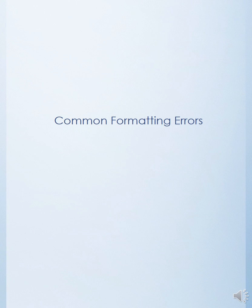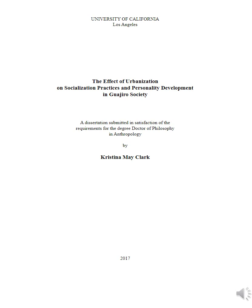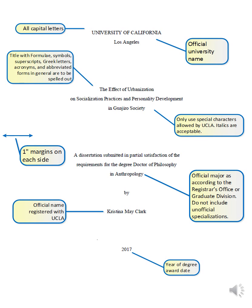Now that you know how the preliminary pages must look, let's go over common errors students make. The most common errors we see on the title page include the following. As shown here, the student did not double-space the page. Everything must be double-spaced. Additionally, the title has been bolded. There can be no bolding on the title page or other preliminary pages. Next, you must state the thesis or dissertation is submitted in partial satisfaction, as this is not the only requirement for your degree. Beyond these mistakes, the overall page spacing is incorrect. There should be more space between each section on the title page. As a reminder, the title page must look like this.